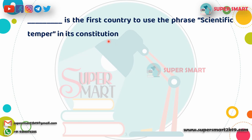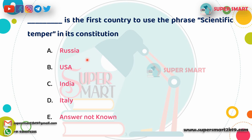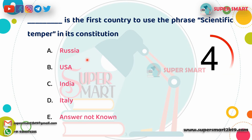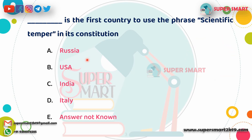First question: Dash is the first country to use the phrase 'scientific temper' in its constitution. The answer is India — scientific temper is mentioned in the Indian constitution.